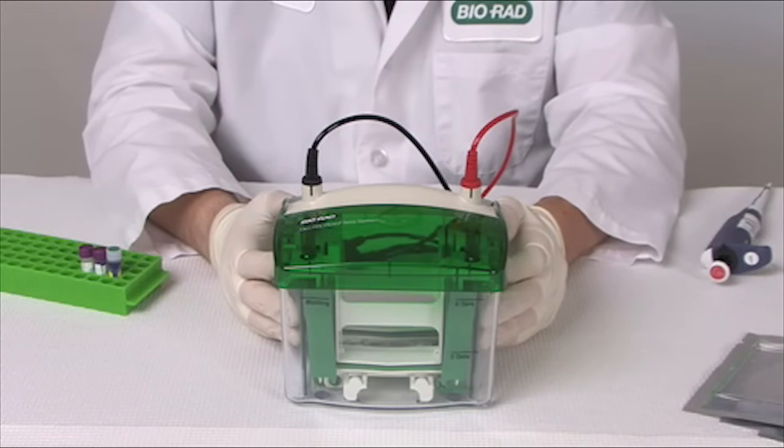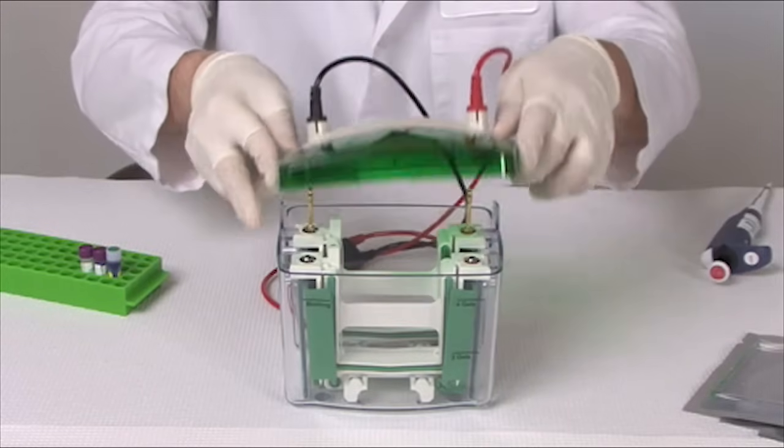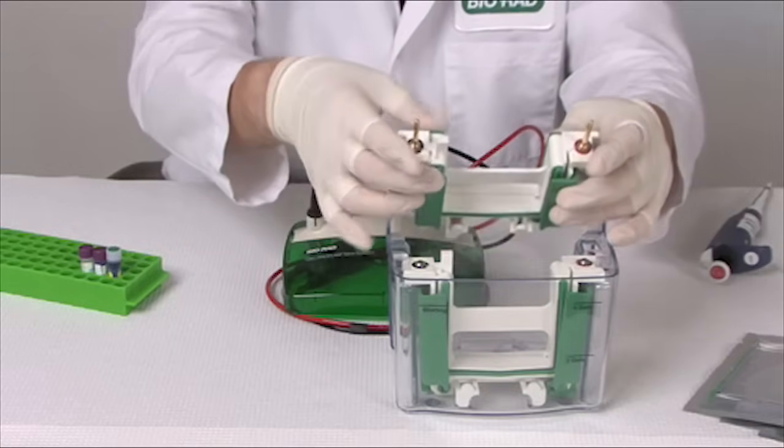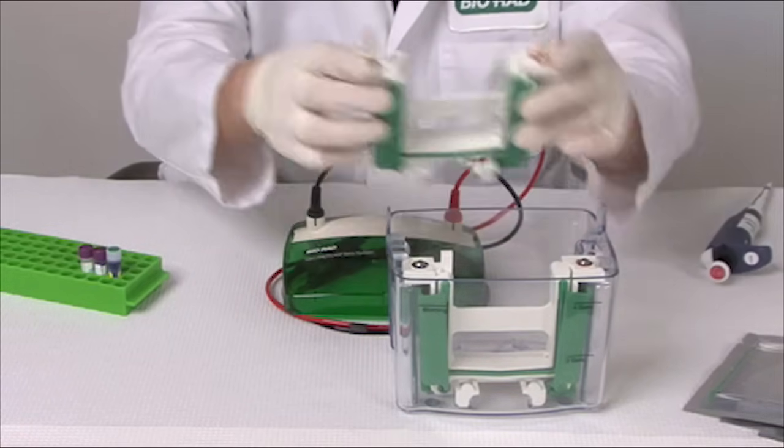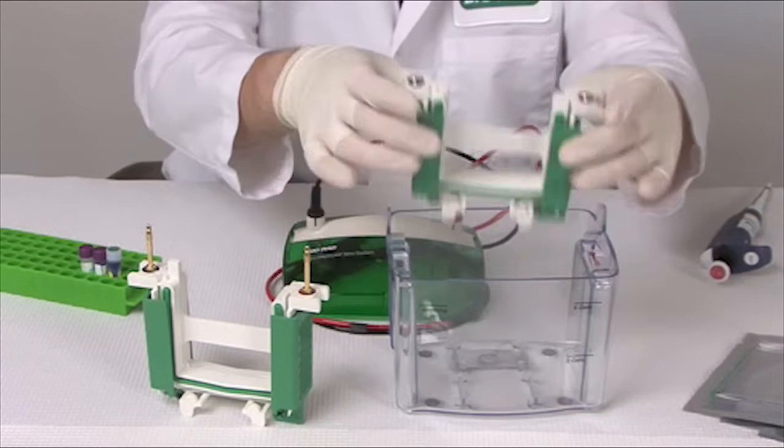You may already be familiar with the MiniProtein TetraCell which allows you to run between one and four gels using two cores. The first core is the electrode assembly module which has two electrode posts. The second core for running three or four gels is the companion module.